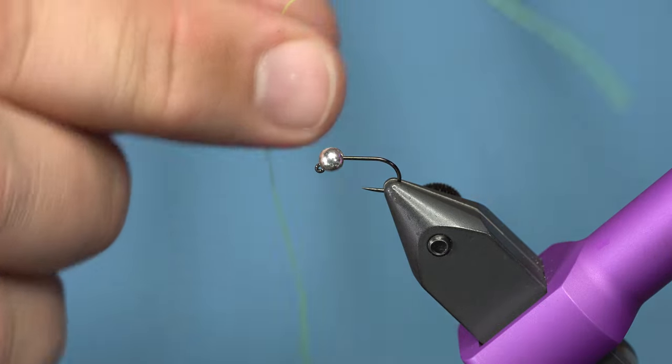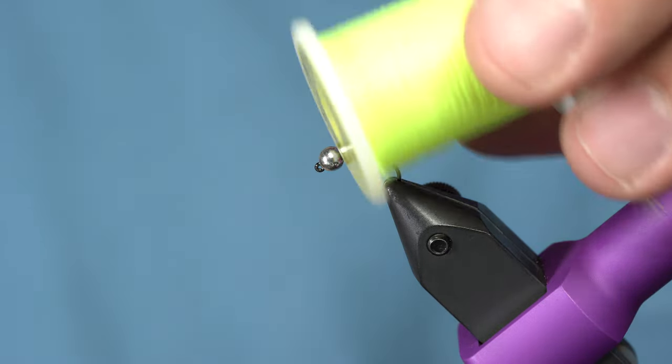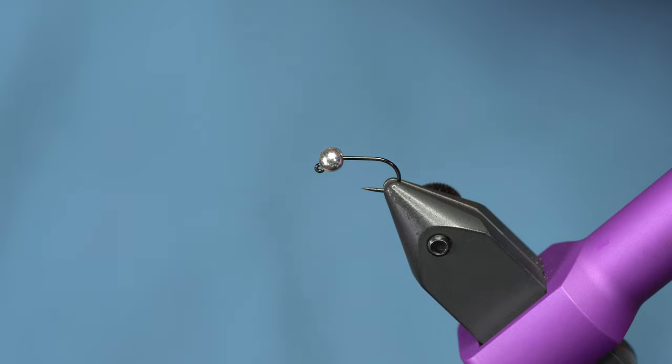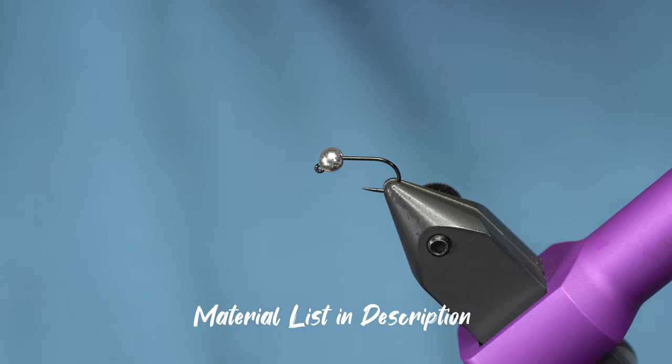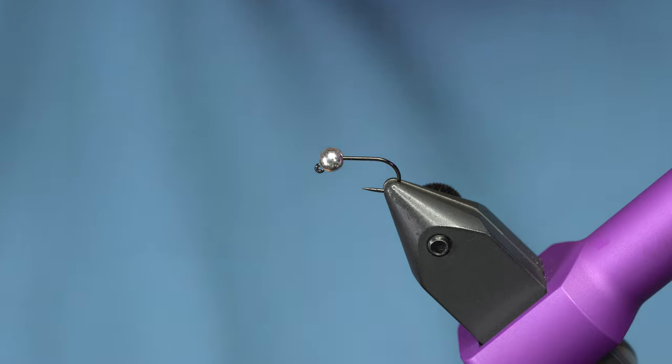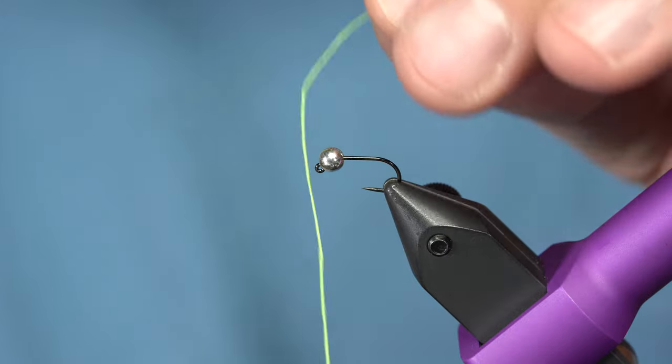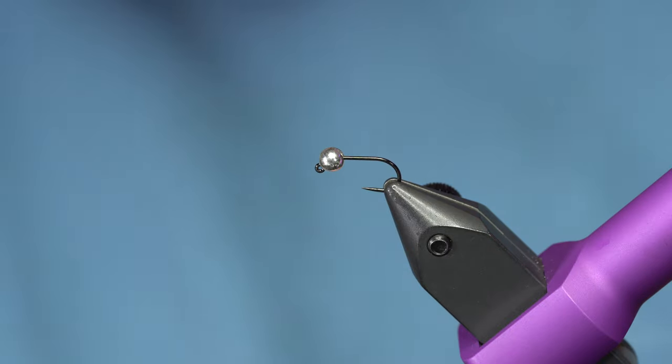The green tag or chartreuse or yellow, whatever you call this color, it's a fish catcher. This is a great fly for caddis season where there might be a lot of little neon rollers or neon caddis pupa that are kind of kicking around, so the fish will key in on this color a lot of times in the summertime, so you should have some in your box.